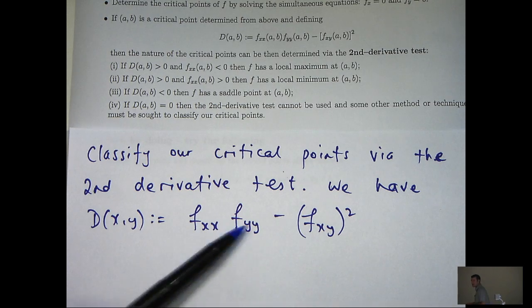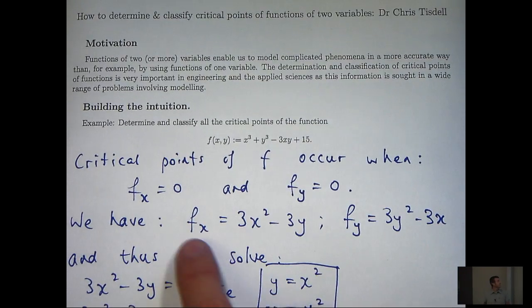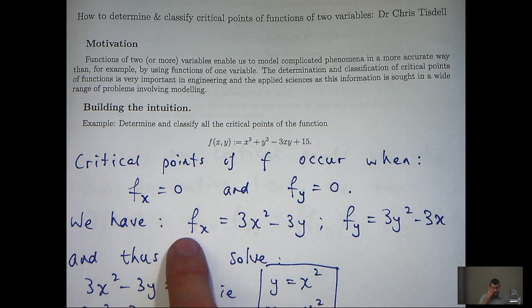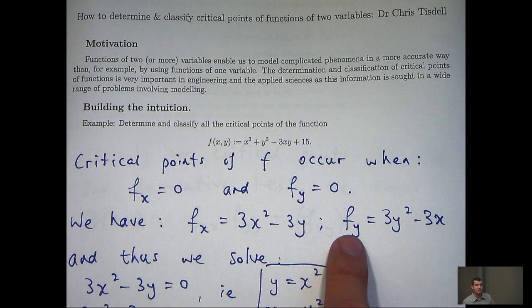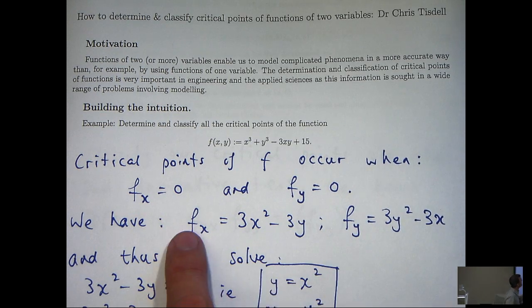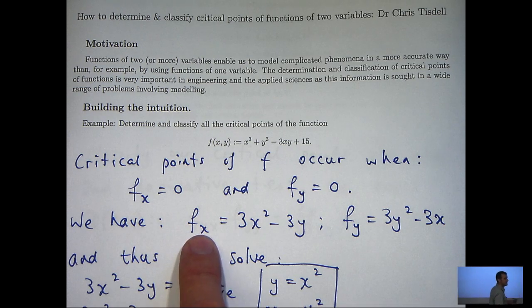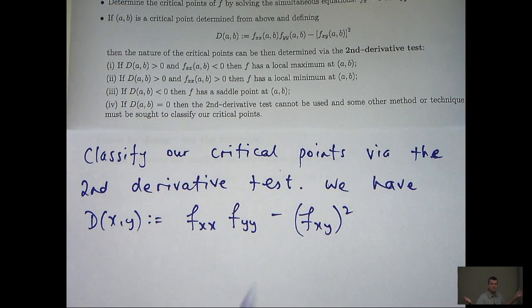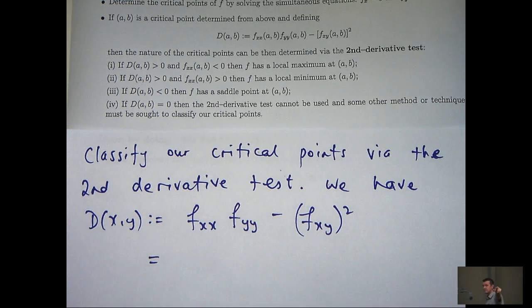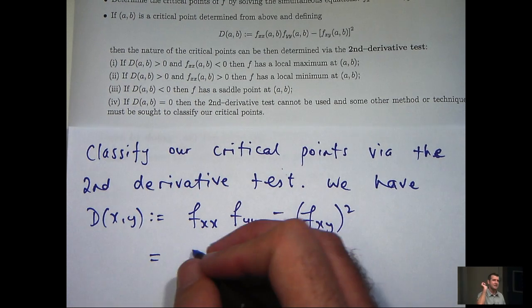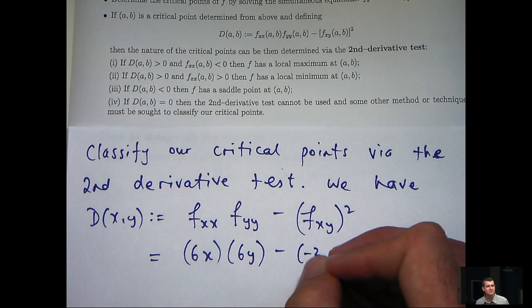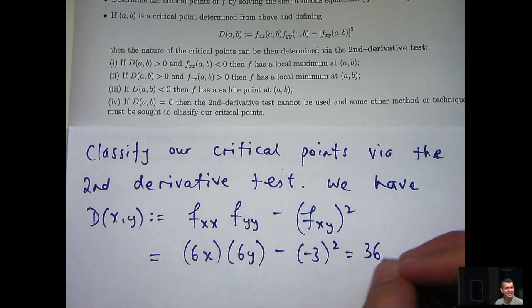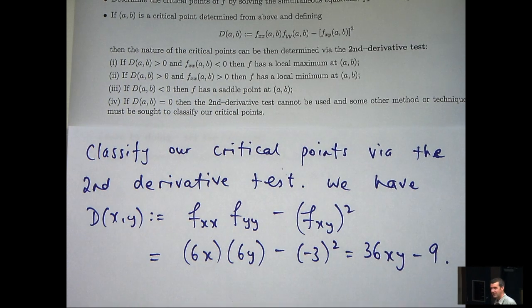Again the subscripts here refer to the second derivative. So here we need to calculate these second derivatives. Well f sub x is this, f sub y is this, so f sub xx will be 6x, f sub yy will be 6y, and f sub xy will be minus 3. So we can now substitute in here and get a general expression and we'll get this.